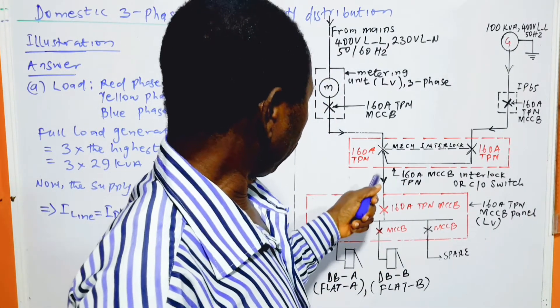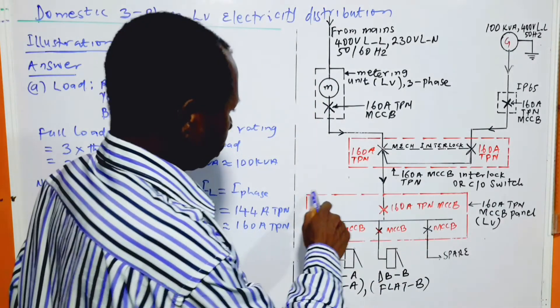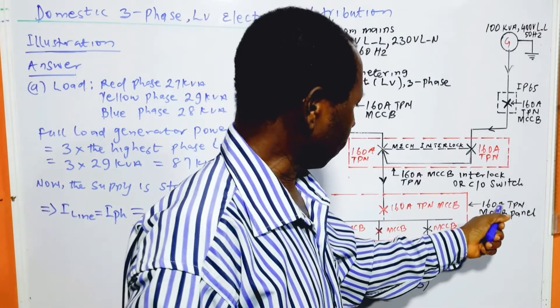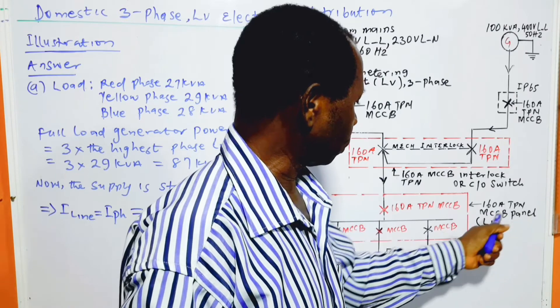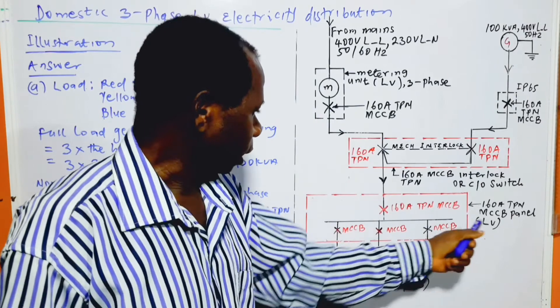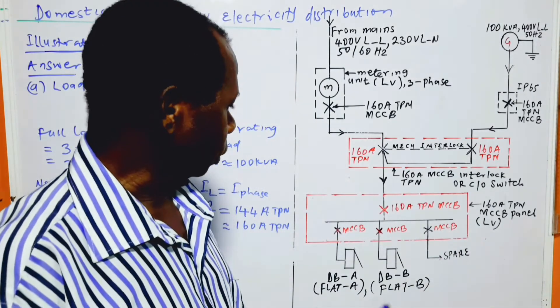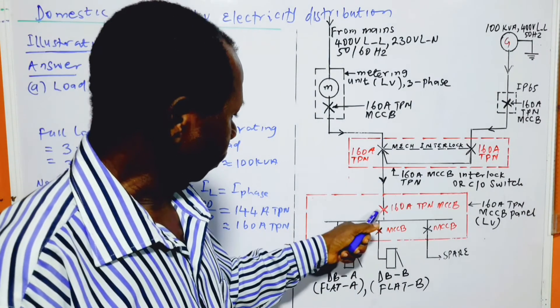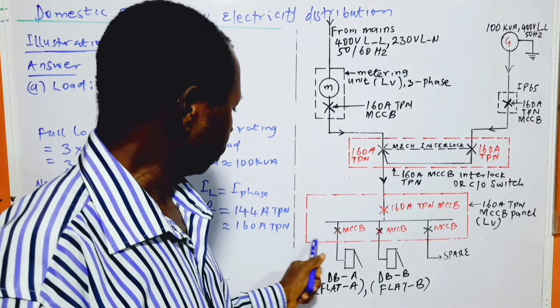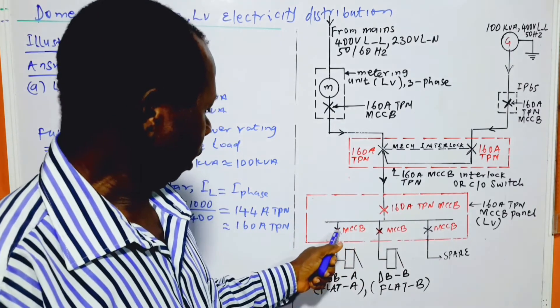We move on. This is the load panel, which is also 160 amp triple phase with neutral MCCB panel, low voltage panel of course. This is 400 volt line to line and 230 volt line to neutral. We have the incoming to the panel being 160 amp triple phase MCCB, and we have the outgoing circuit breakers.